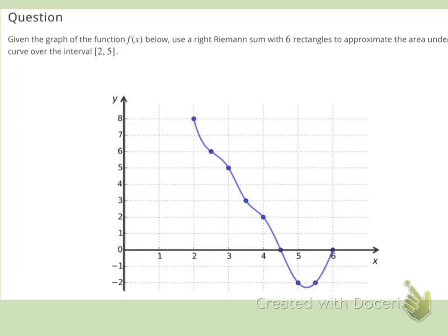For this practice problem, we're going to use a right Riemann sum with six rectangles to approximate the area under the curve over the interval from two to five.